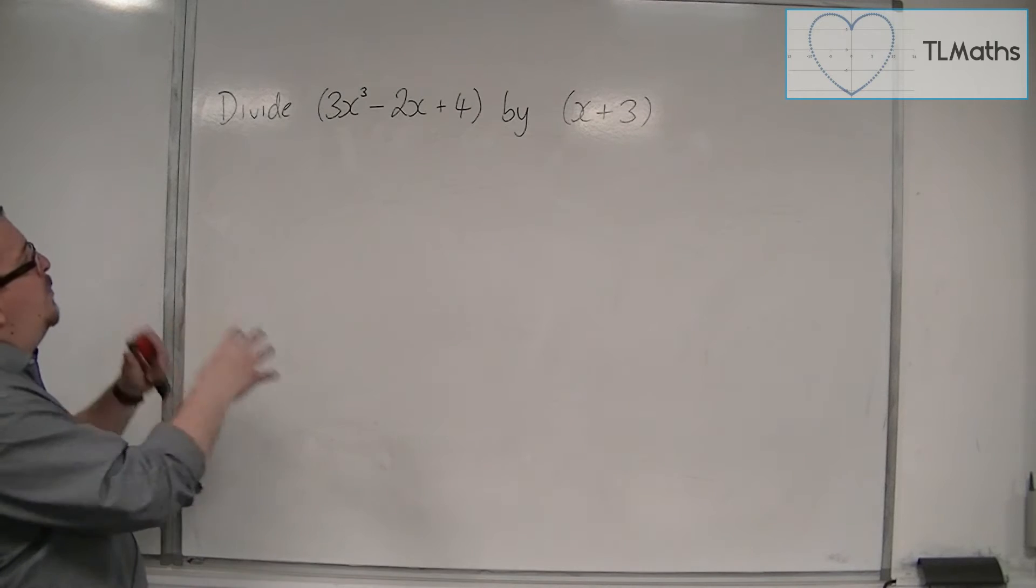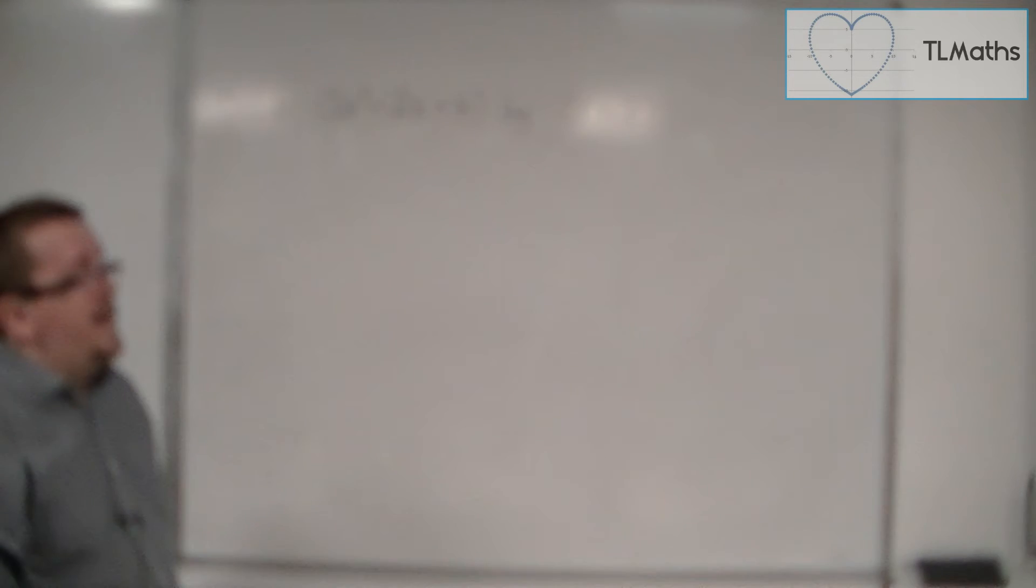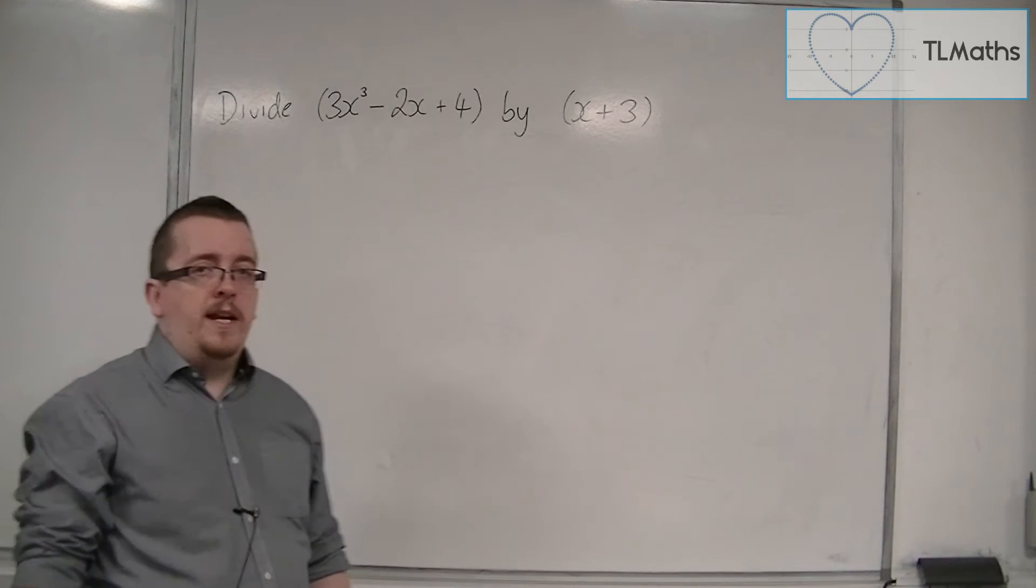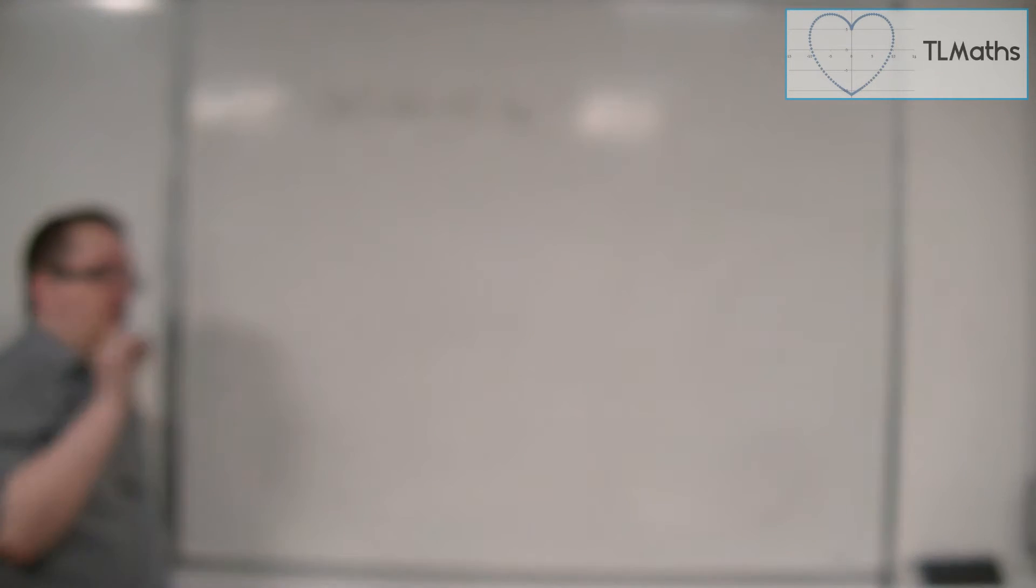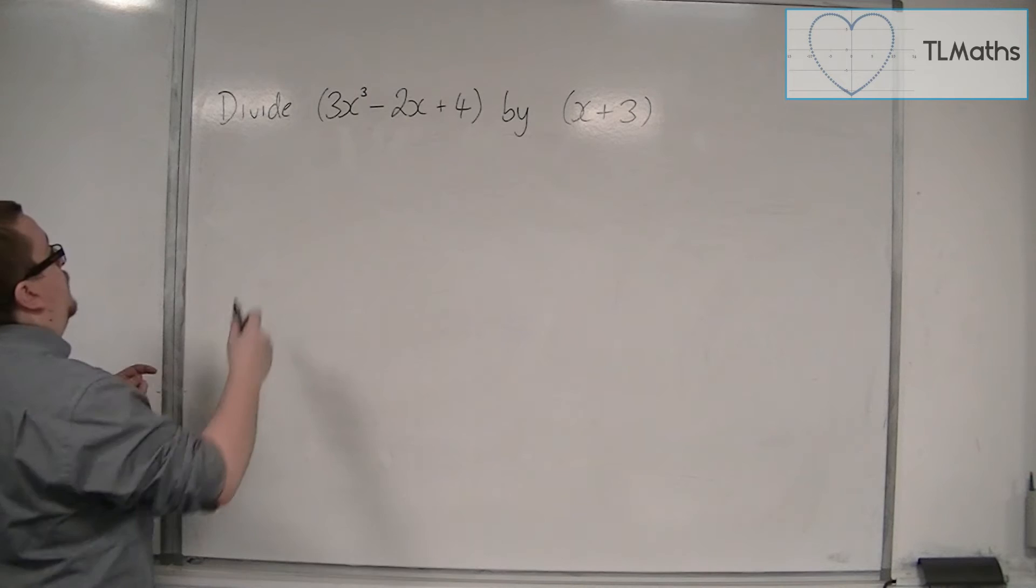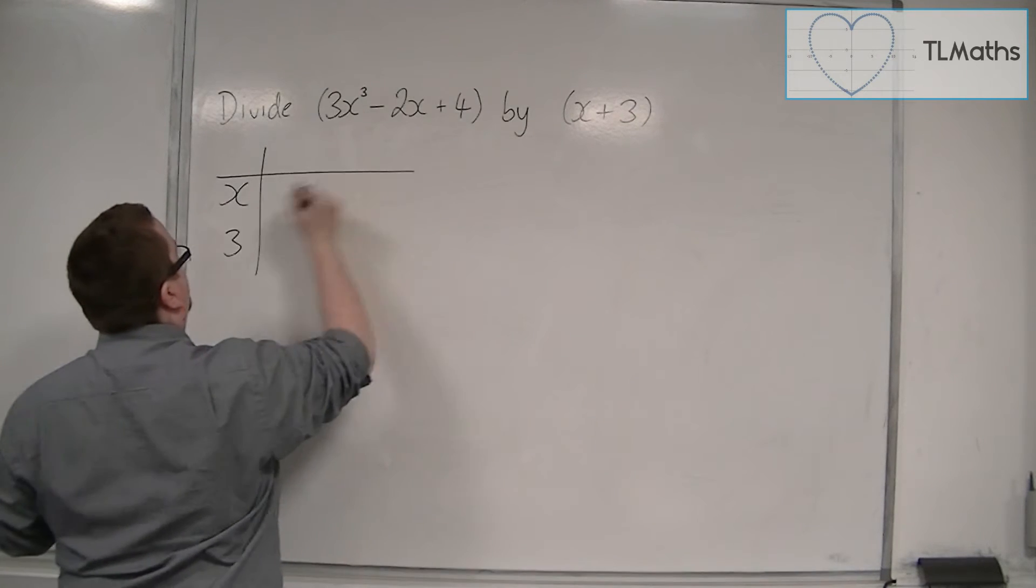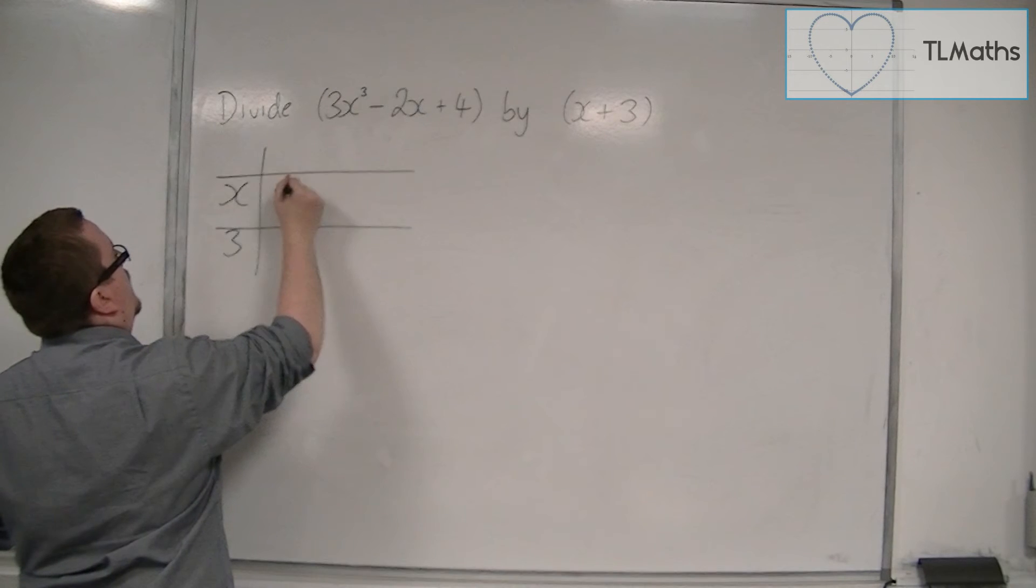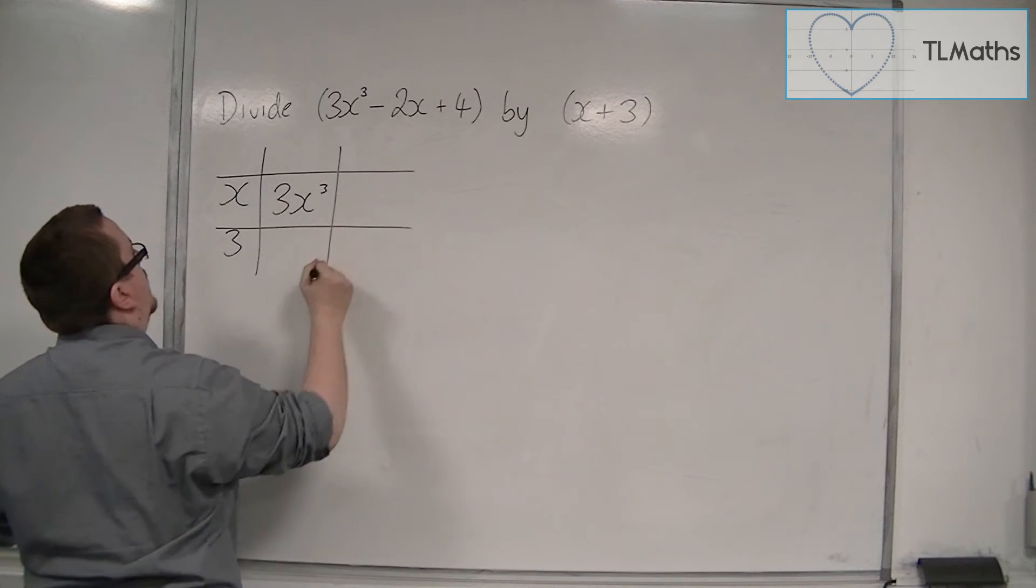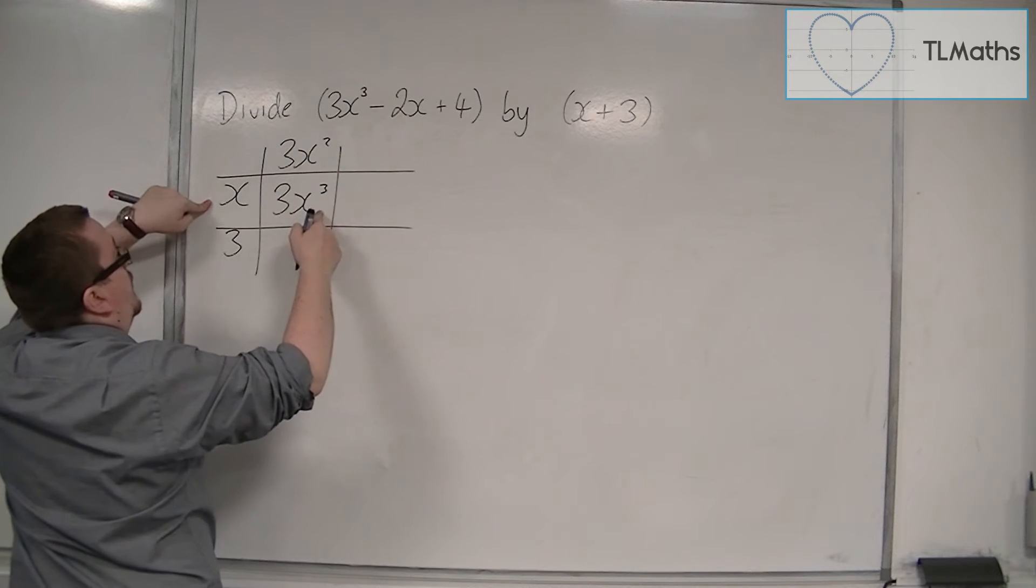So I'm going to work through this example. We're going to divide 3x cubed minus 2x plus 4 by x plus 3. And I'm going to do it by the grid method first. So the grid method first would say that we've got x plus 3, and we want to get 3x cubed.